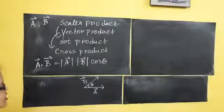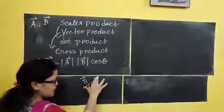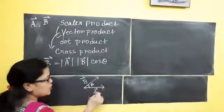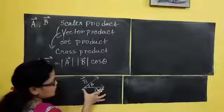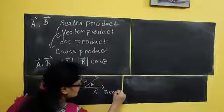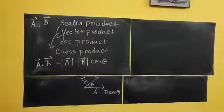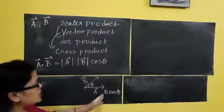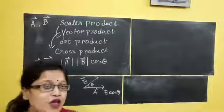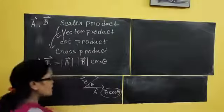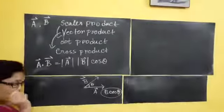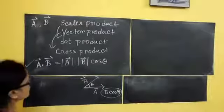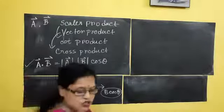Let's understand why. If this is B, then what is the component of B acting along A? We know that the component of B along A is B cos theta. So if I do the multiplication, I take magnitude of A and the magnitude of B along the direction of A, which is B cos theta. So A dot B equals magnitude of A, magnitude of B cos theta. This is called scalar product.